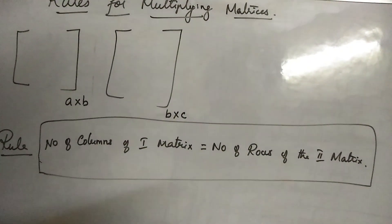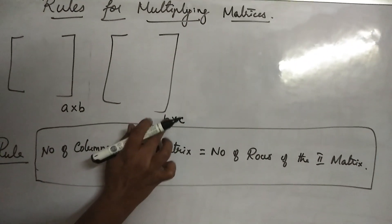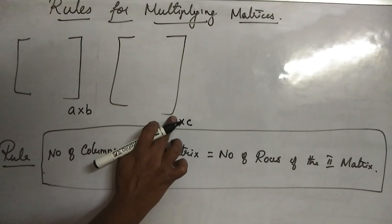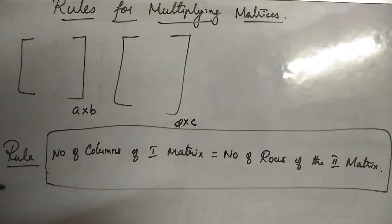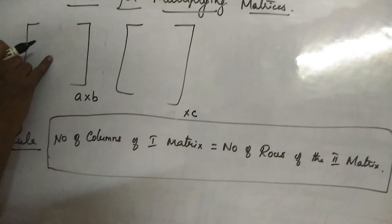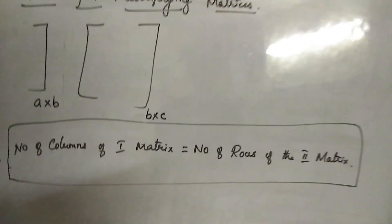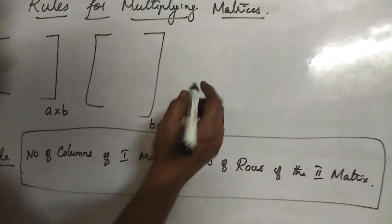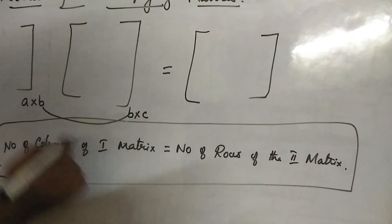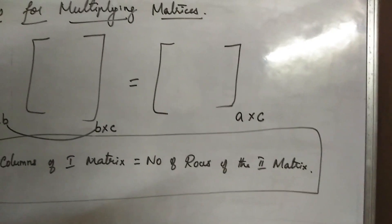If you get this condition, then we can proceed for multiplication. If the number of columns of the first matrix is not equal to the number of rows of the second matrix, we cannot multiply. When we can multiply, we take the result: the answer order will be A by C.